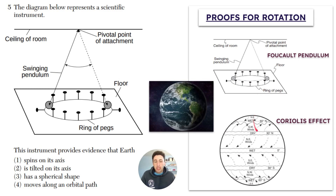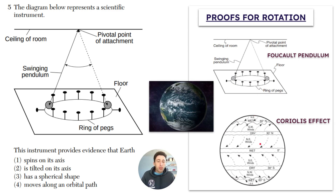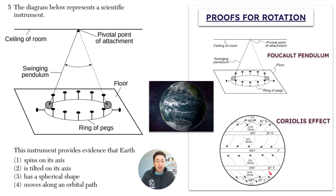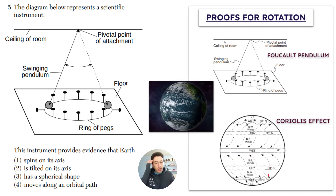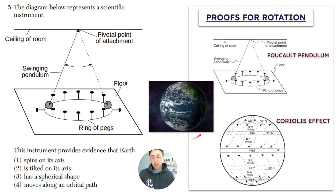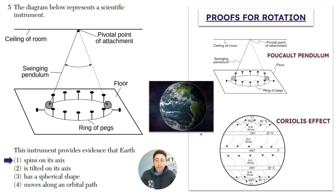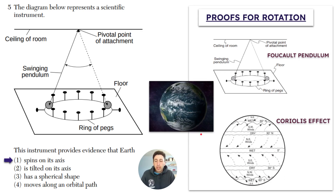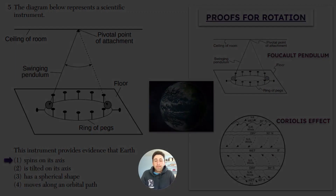The second proof of Earth's rotation is the Coriolis effect — the winds on Earth do not move in a straight line. In the northern hemisphere they move clockwise, and in the southern hemisphere they move counterclockwise. Like if you're on a merry-go-round and someone throws a ball, the ball will curve. Just like on Earth, the winds will curve as well. The answer to question five is going to be one — that the Earth spins on its axis, because the diagram shows a Foucault pendulum.